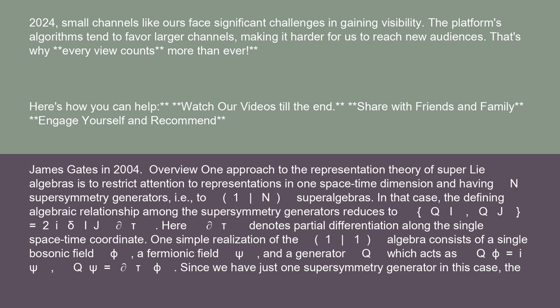One simple realization of the (1|1) algebra consists of a single bosonic field φ, a fermionic field ψ, and a generator Q which acts as Q φ = i ψ, Q ψ = ∂ φ.